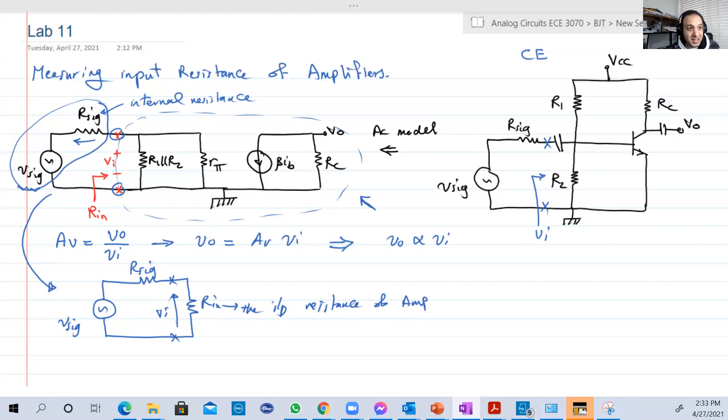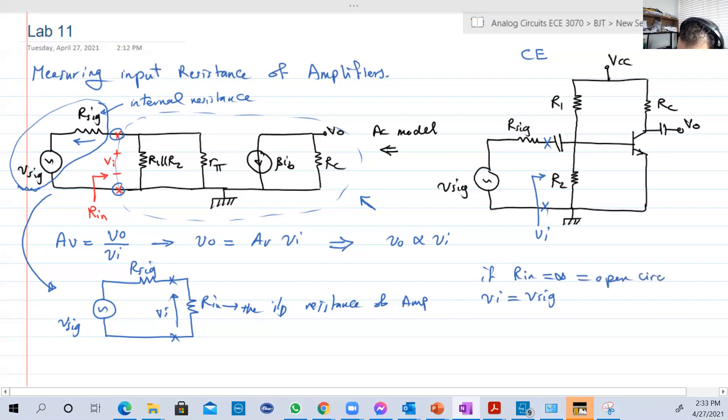V signal, R signal, and R input. And here is V input. So basically, V input is the voltage across R input. This is the input resistance of the amplifier. So V input is the actual voltage that the amplifier is going to amplify for us. The higher this voltage, the higher the output. So now the question is, what is a good value for R input? The best value is infinity. If R input equals infinity, then the input will be V signal. Basically, if R input is an open circuit.